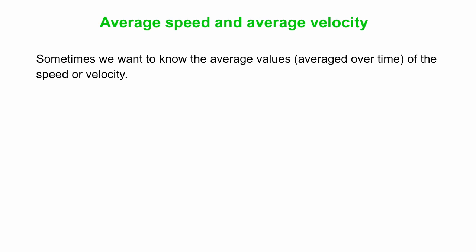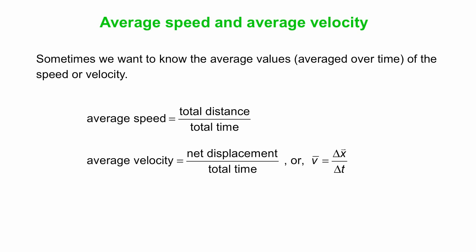Sometimes we want to know the average values, averaged over time, of either the speed or the velocity. How do we do that? Well, average speed is some quantity over total time. What do you think it is? Average velocity is some different quantity over the total time. What do you think that is? So average speed turns out to be the total distance traveled divided by the total time, where average velocity is the net displacement over the total time.